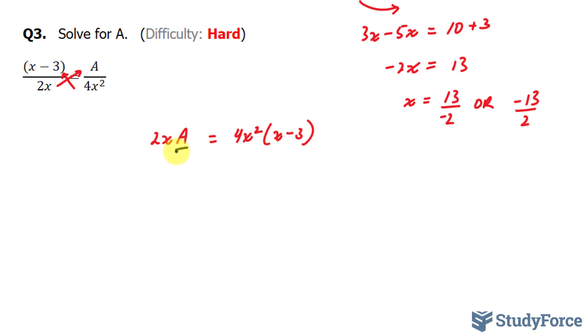Now remember, our target is this A. All we have to do is divide both sides by 2x. And watch what happens. This cancels out with this, leaving us simply with A on the left side. And on the right side, 4x squared x minus 3 over 2x.